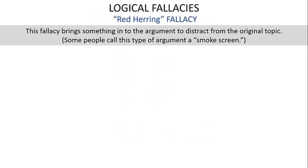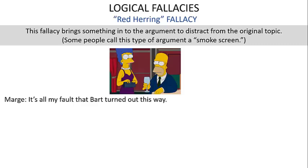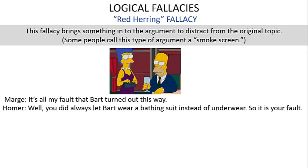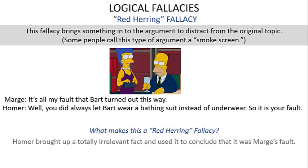The red herring fallacy brings something into the argument to distract from the original topic — sometimes called a smokescreen. Marge says: it's all my fault that Bart turned out this way. Homer replies: you always did let Bart wear a bathing suit instead of underwear, so it is your fault. Homer brought up a totally irrelevant fact and used it to conclude that it was Marge's fault.